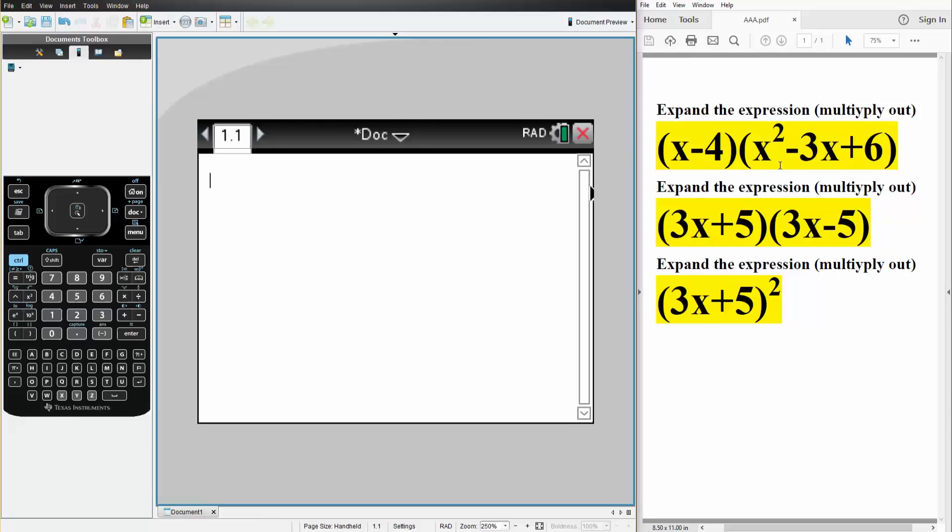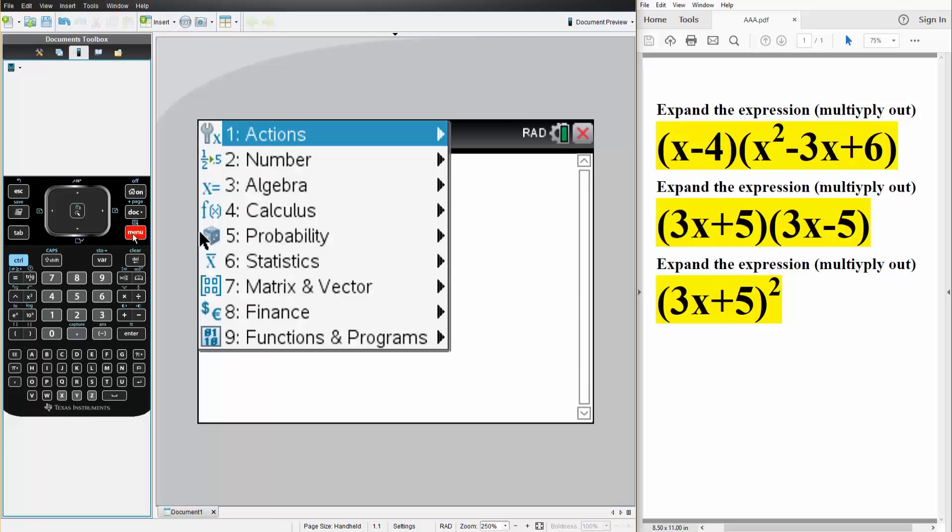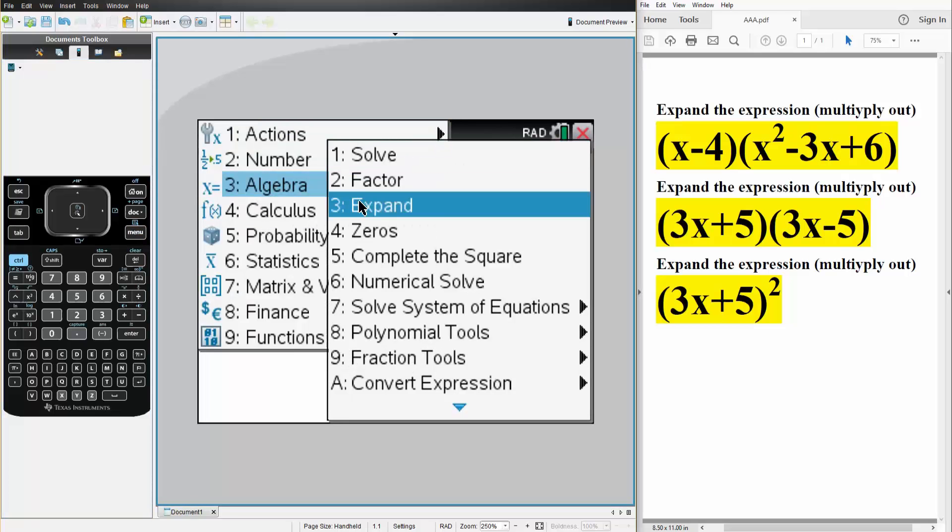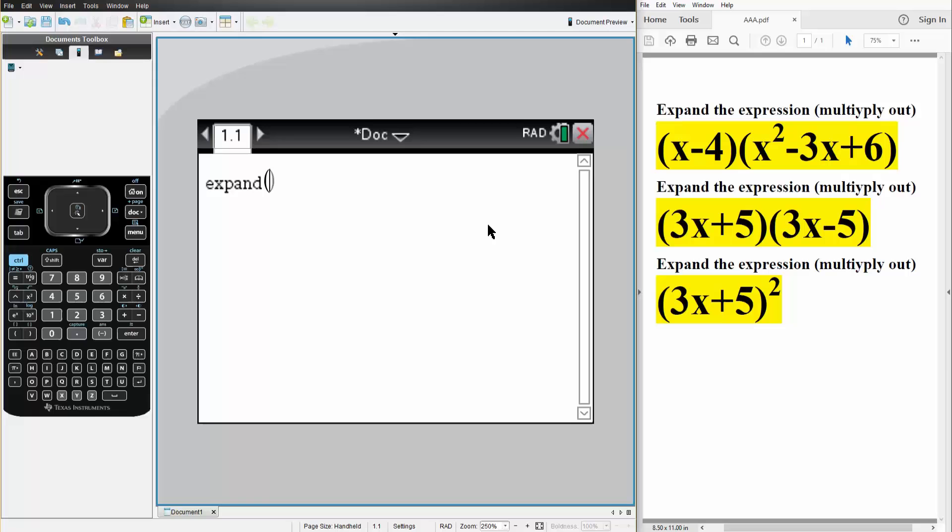So in order to expand or multiply out this expression, we hit menu, we hit algebra, we hit 3, expand. And now we write our expression. So we have x minus 4 times parentheses x squared minus 3 times x plus 6.